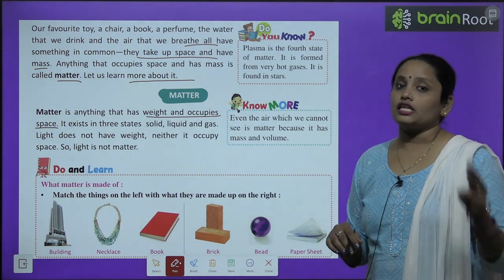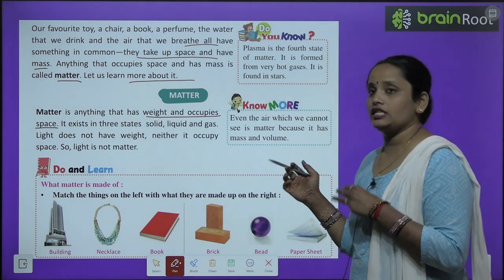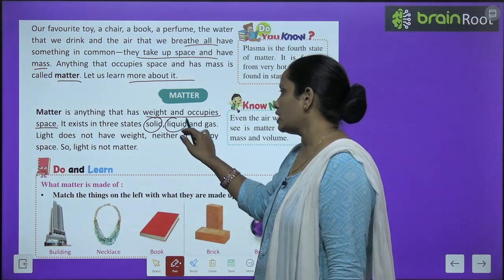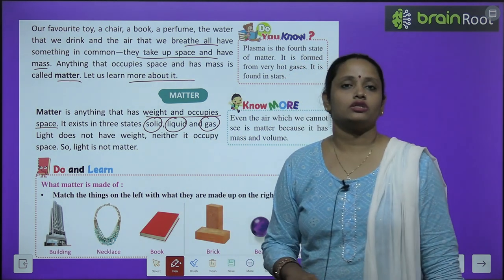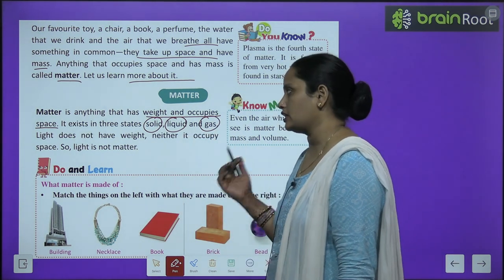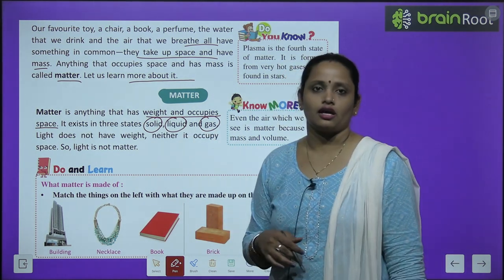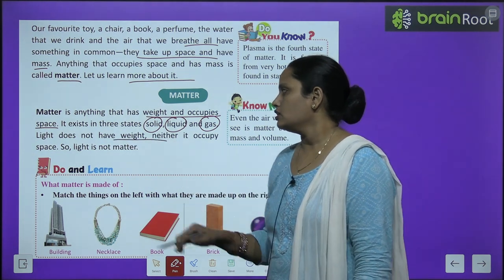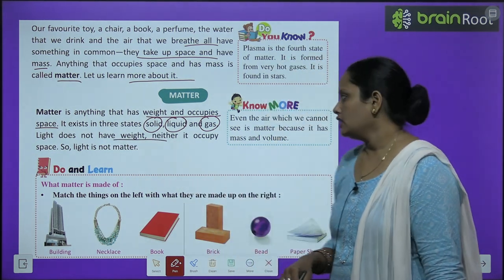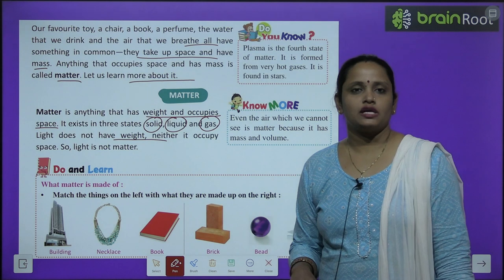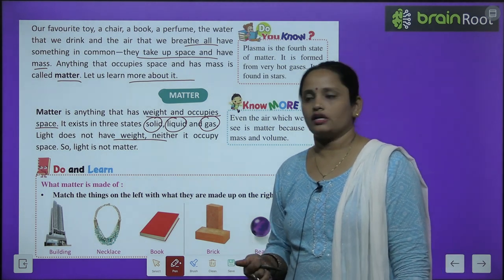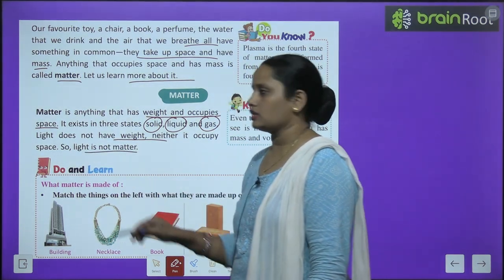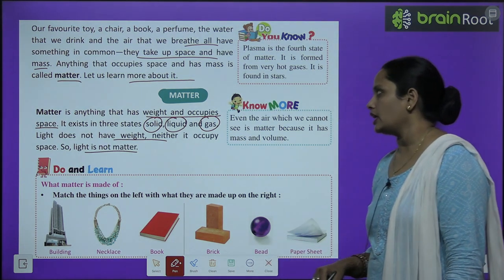Matter exists in three states — ye teen states mein exist karti hai: solid, liquid, and gas. Light does not have weight — light ka weight nahi hai — neither does it occupy space. So light is not matter — isliye light jo hai, matter nahi hai.